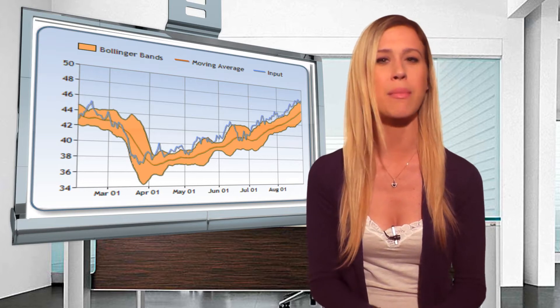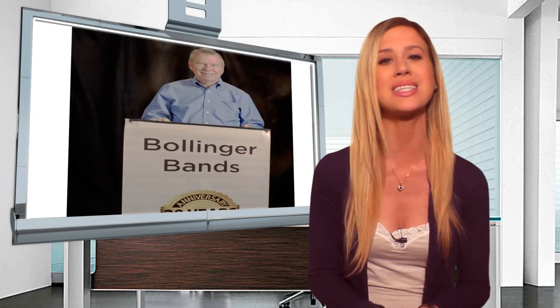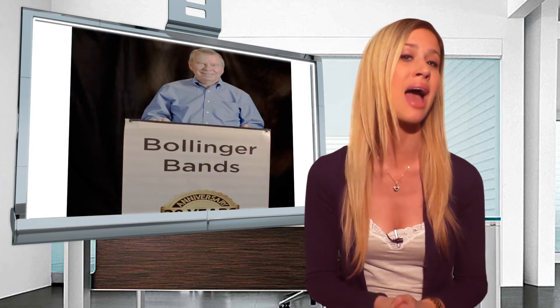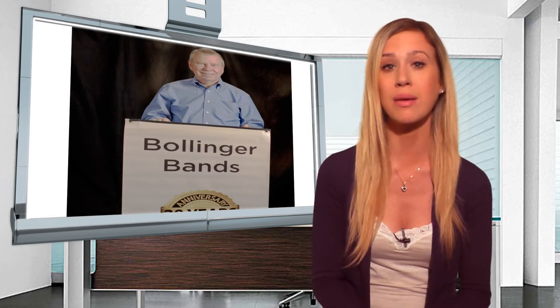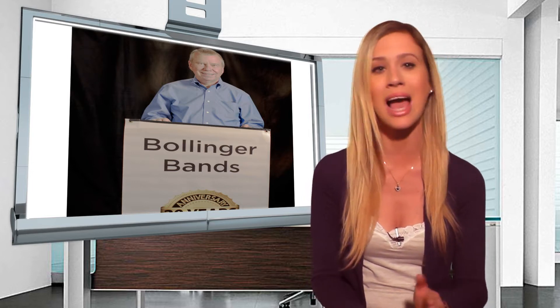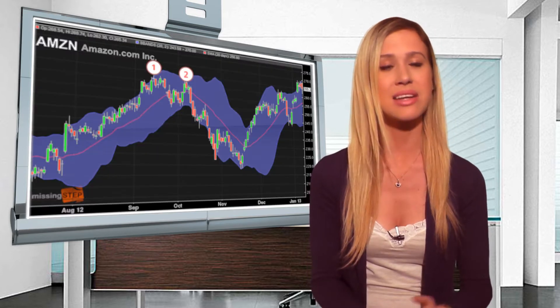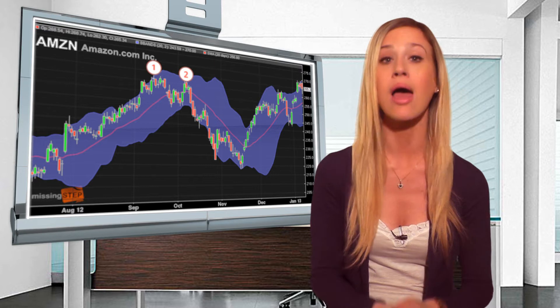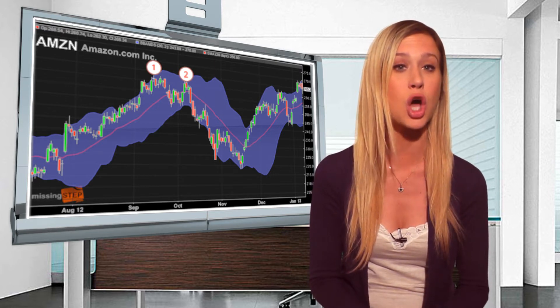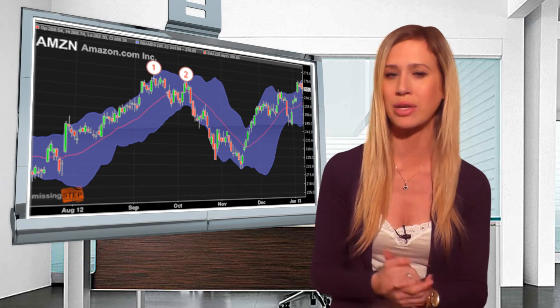The Bollinger Bands were created by market technician John Bollinger, who came up with the technique of using averages that move with the trading bands, as the Bollinger Bands add and subtract a calculation of standard deviation. Standard deviation is a mathematical formula that measures volatility and shows how the price of a stock can spread around the stock's true value.